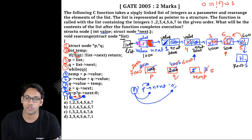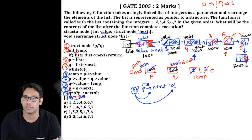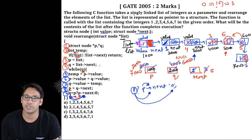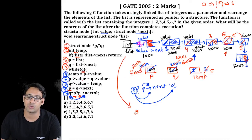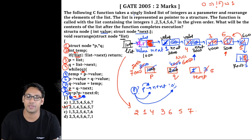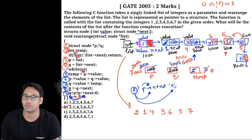Since q is now storing null, the while loop condition fails and we exit. Looking at the linked list after all operations, it now contains the data: 2, 1, 4, 3, 6, 5, 7. Matching this to the options, option B is correct as it exactly matches our output. This was the GATE 2005 question. Let us now try to solve more questions asked in GATE examinations.